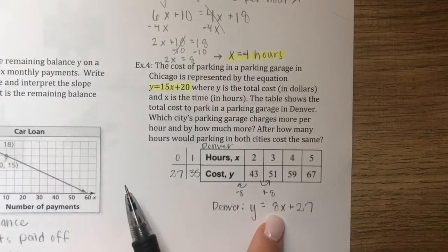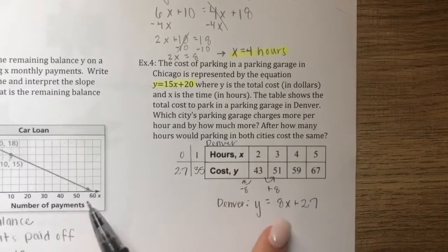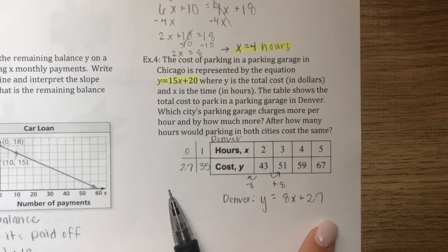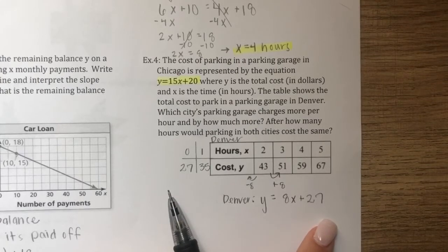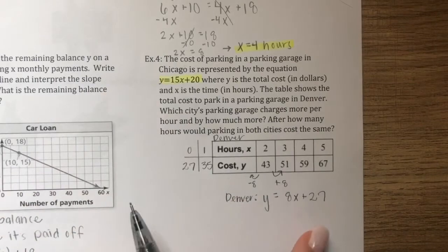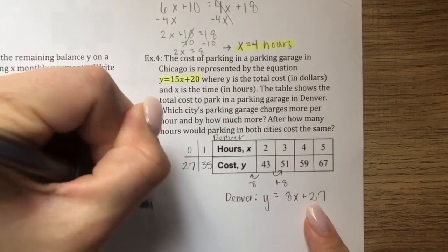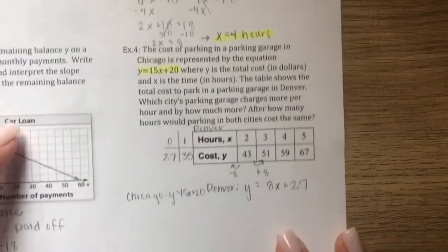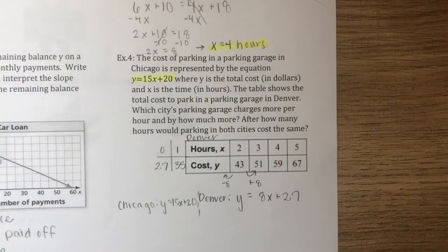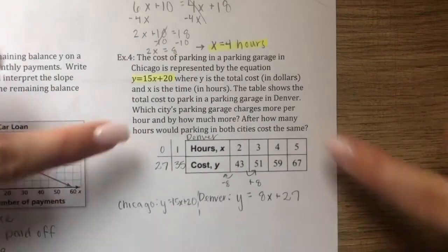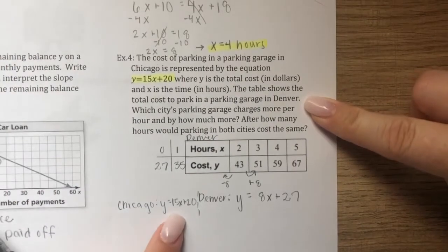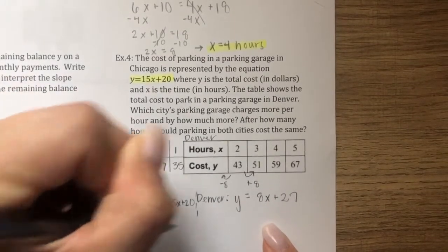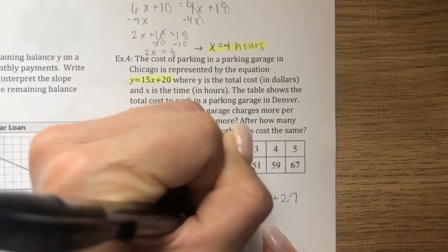The slope of 8 is Denver's hourly rate — that's what gets added each hour. The y-intercept of 27 is the flat initial cost you pay as soon as you enter the parking garage. Chicago's equation was y equals 15x plus 20. Comparing the slopes, Chicago charges seven dollars more per hour.